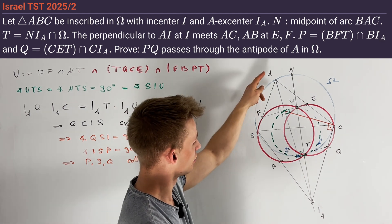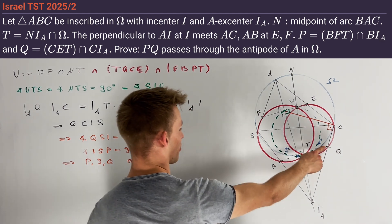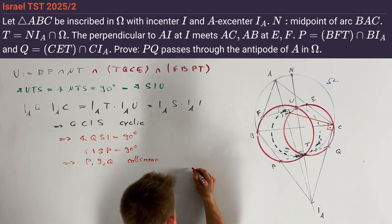And since PQ is perpendicular to AS, we know that A' has to be the second intersection. And therefore, we're done.